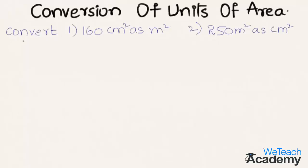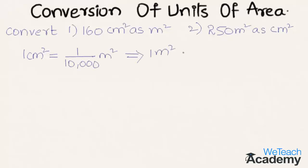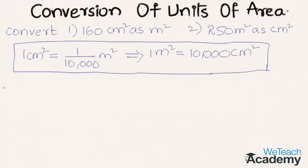The given examples are: one, convert 160 centimeter square to meter square; and two, convert 250 meter square to centimeter square. For the first example, we already know that one centimeter square is equal to one by ten thousand meter square, which implies one meter square is equal to ten thousand centimeters square.